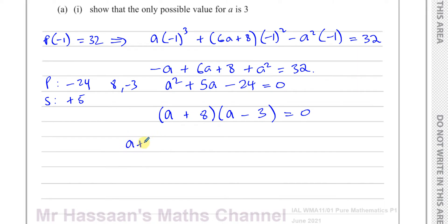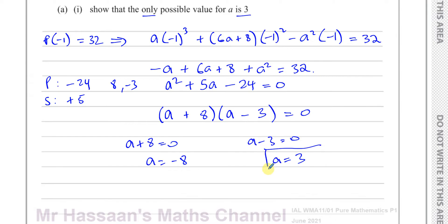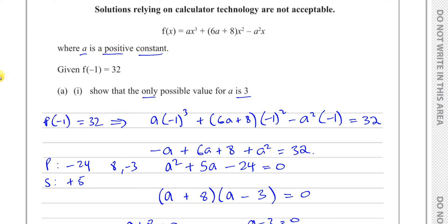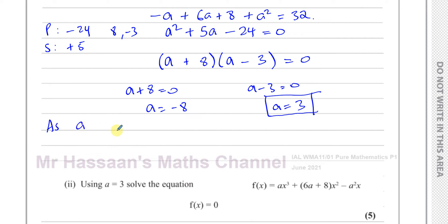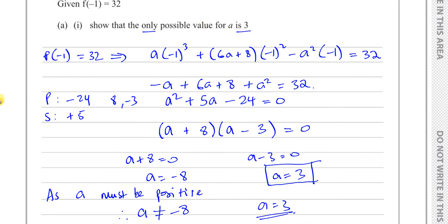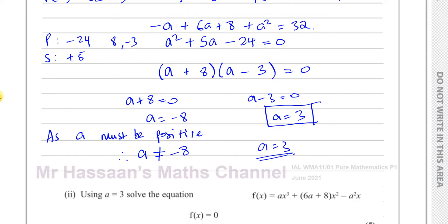Now we can say either a + 8 = 0 or a − 3 = 0, giving a = −8 or a = 3. The question says show that the only possible value for a is 3. Since the question told us a is a positive constant, a cannot be negative 8. Therefore a = 3. It's important to state this because the question asks you to explain why you reject a = −8. So that's part a, part 1 done.